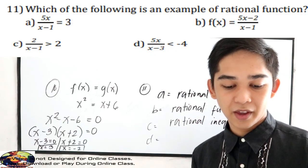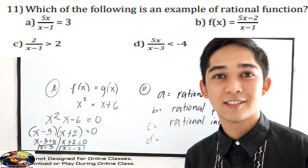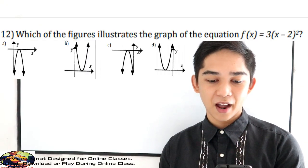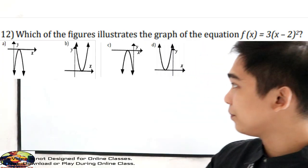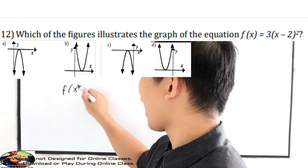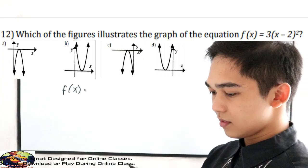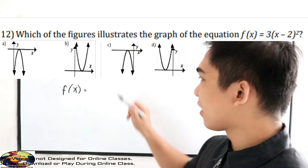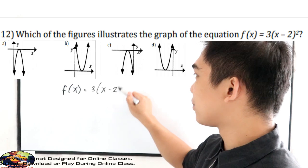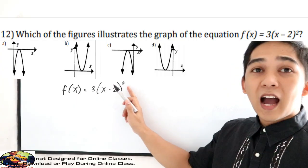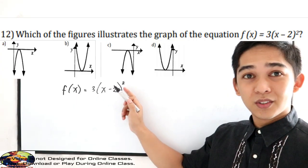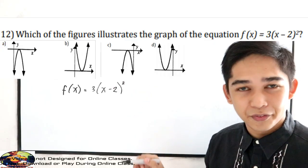We are now in number 12. The question is: which of the figures illustrates the graph of the equation f of x is equal to 3 times x minus 2 squared? Our exponent is 2, so we know that the graph is a curve or parabola.